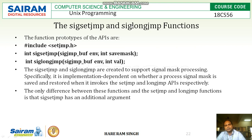Next topic is sigsetjmp and siglongjmp — also referred to as signal set jump and signal long jump functions. The prototype for sigsetjmp is: int sigsetjmp(sigjmp_buf env, int save_mask). The prototype for siglongjmp is: int siglongjmp(sigjmp_buf env, int value).